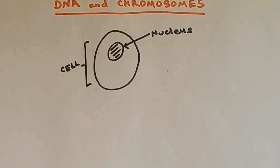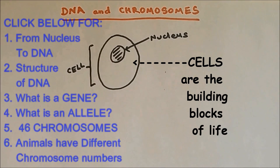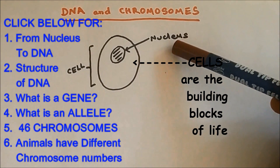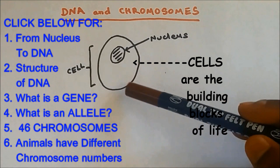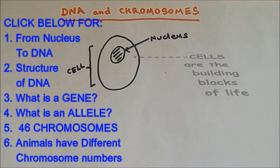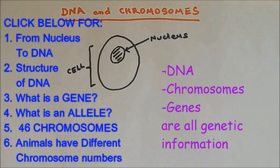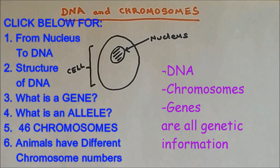Hi everyone, welcome to Science Tutorial for You. In this video I'm going to describe DNA, genes and chromosomes. From this diagram, nucleus is found in a cell, and cells are the building blocks of life. The nucleus contains genetic information — DNA, chromosomes and genes can all be called genetic information.